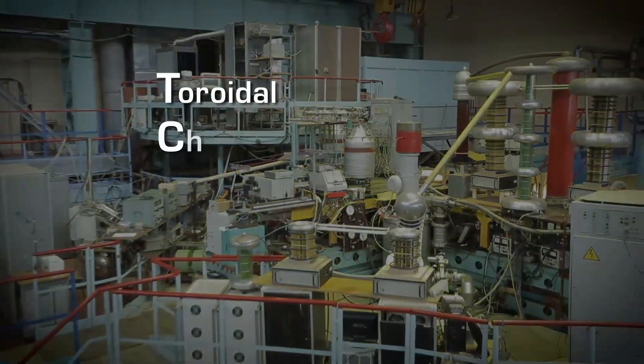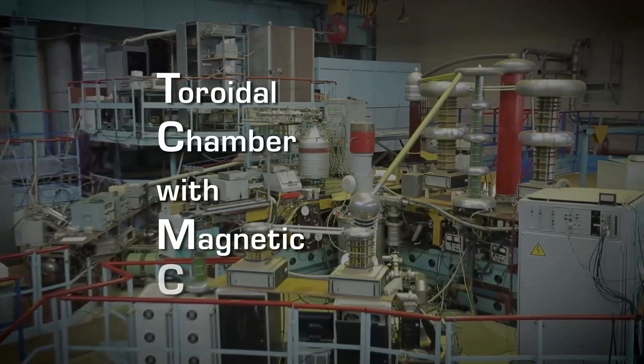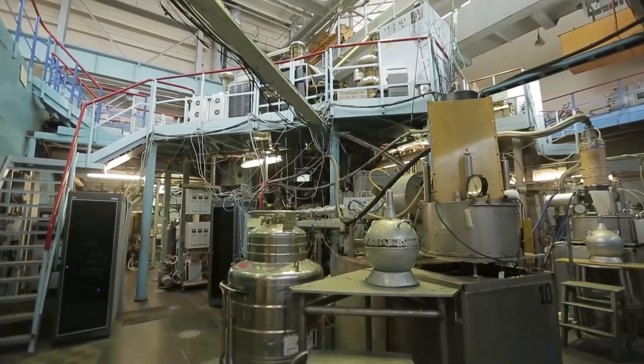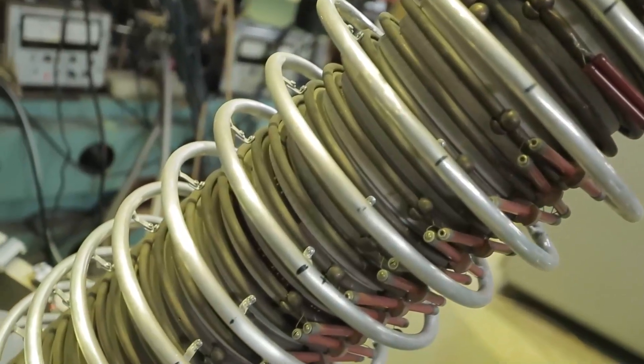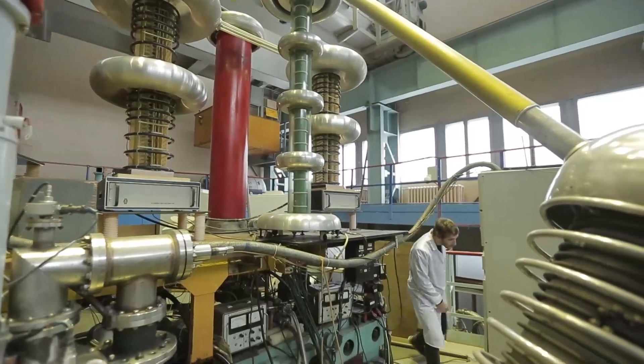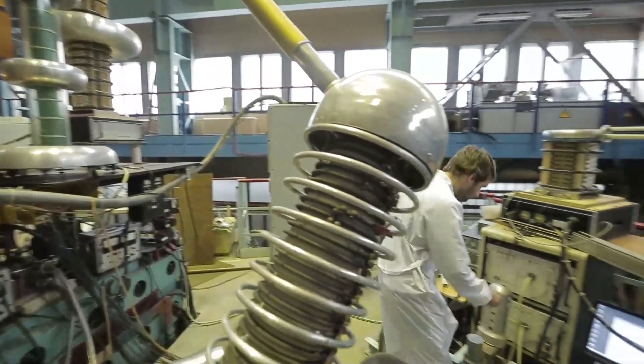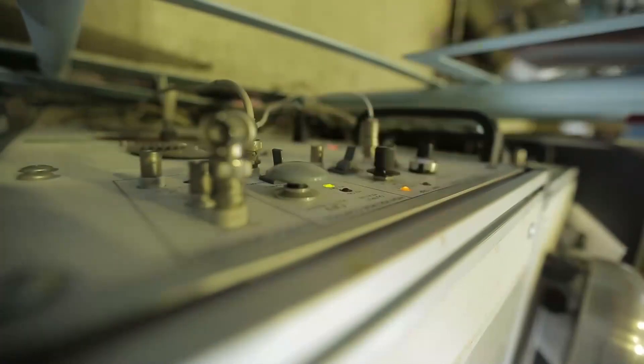Tokamak stands for the toroidal chamber with magnetic coils. It has the shape of a donut, a toroid scientifically speaking, with the coils wound around it to create a magnetic field. This configuration turned out to be perfect for retention of the plasma on the ground.